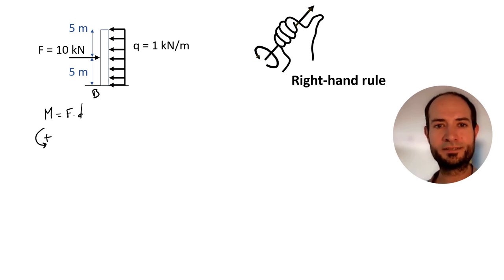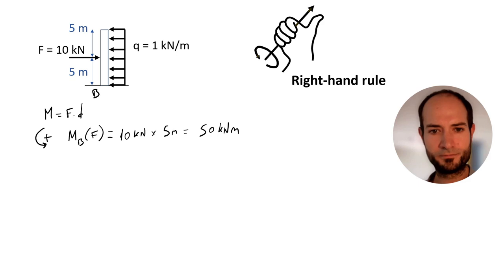So the total moment on point B will be the addition of the moment caused by the point load and the moment caused by the light load. I'm going to calculate them separately. Moment on B caused by f: the load is 10 kN and the distance is 5 meters to the base of the wall, so that's 50 kN meter. It's rotating clockwise, so negative.